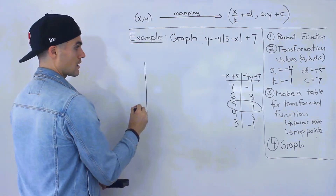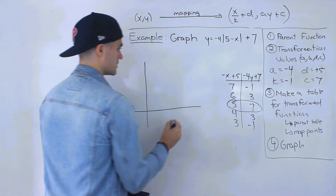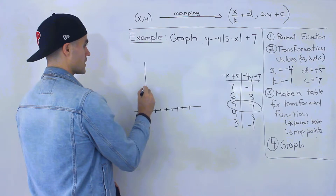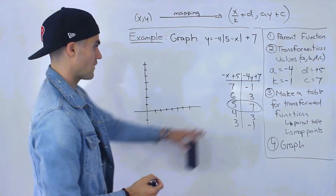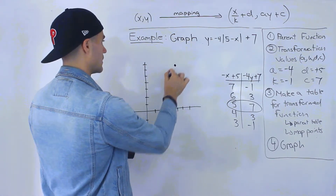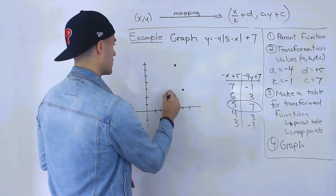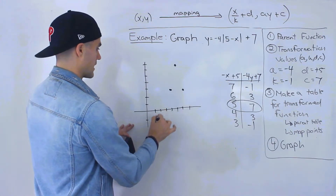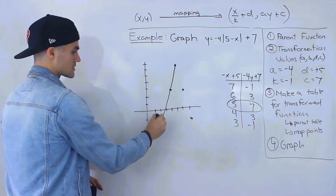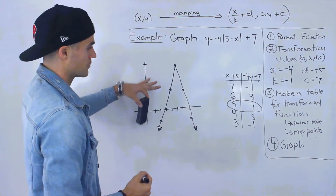All the x values are positive and the y values are a mix. Plotting the points: the vertex is at 5, 7 — up here. Then we have 6, 3 and 4, 3 on either side, then 3, negative 1 and 7, negative 1 further out. Connecting these points gives the final graph — something like an inverted V shape. If you made it on graph paper you'd get something similar.